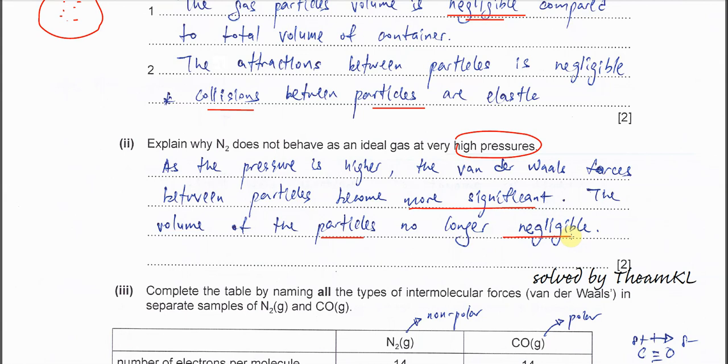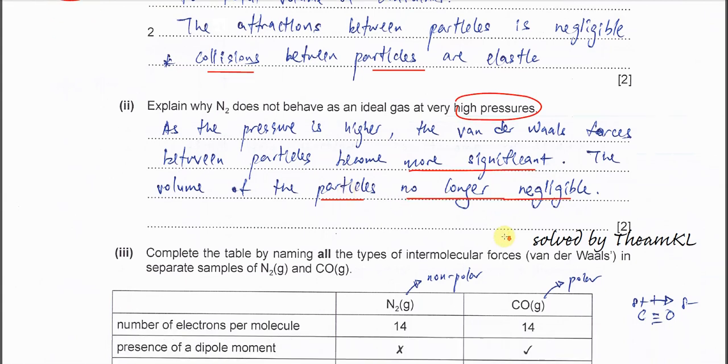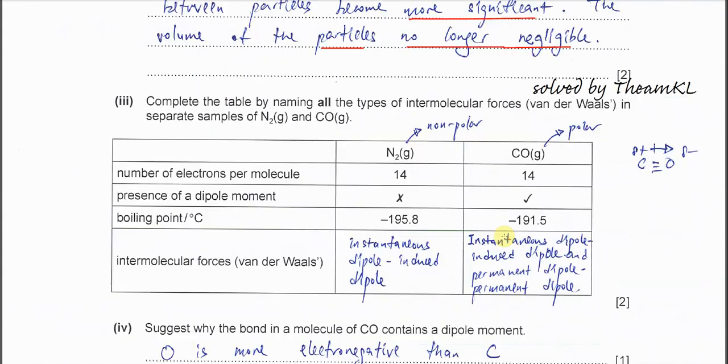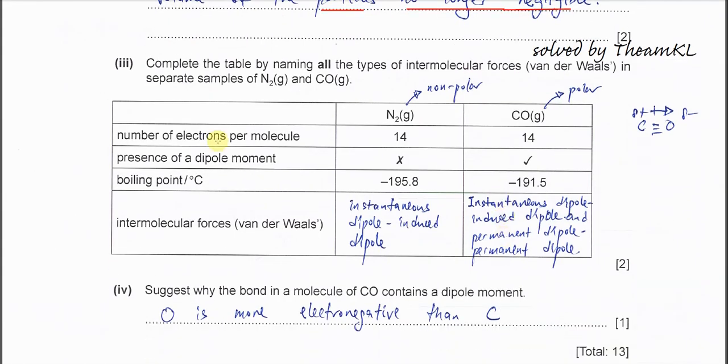When the volume is lower or smaller, the particle volume is no longer negligible, it becomes significant now. When the volume that the particles occupy is reduced, the volume of particles itself is significant, no longer negligible.